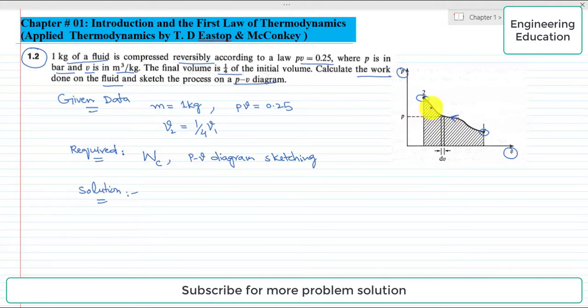From state 1 to state 2, looking to the direction of the arrow, the expression developed for the general work done is W equals minus m integral P dV.